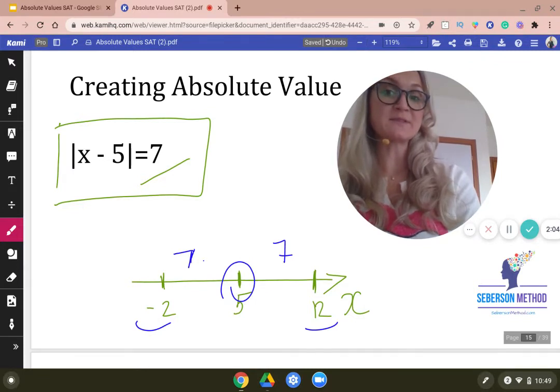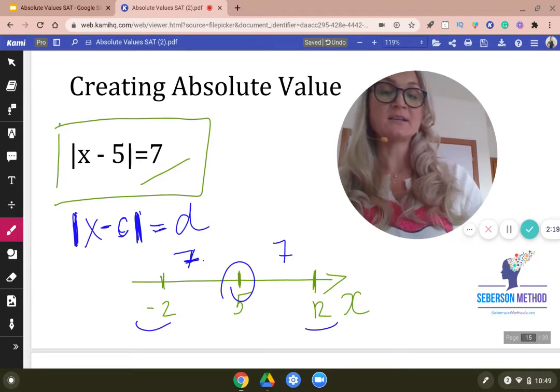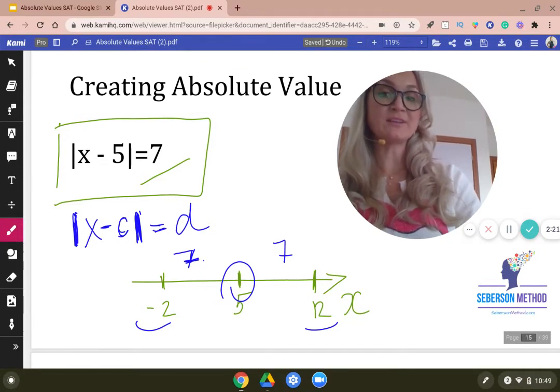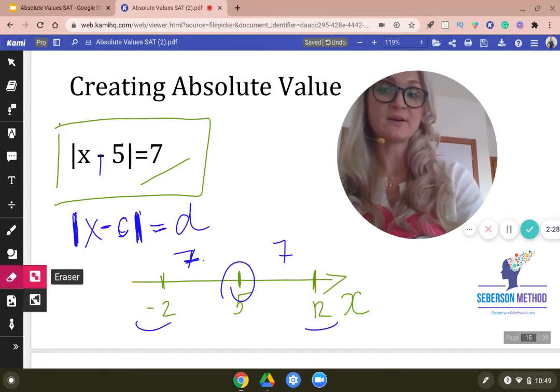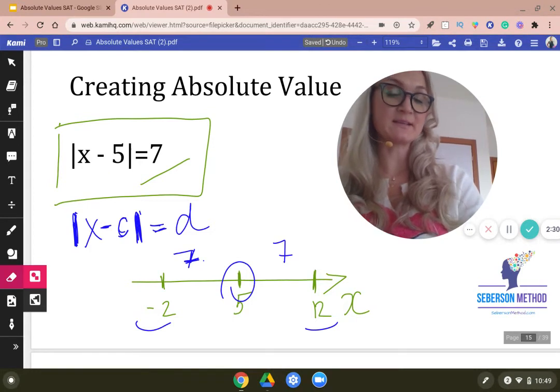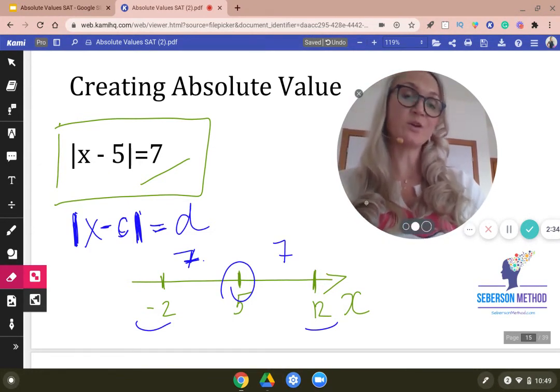So when you're creating an absolute value, keep in mind that inside of the parent, inside of the walls, I call them the walls, there's an x minus the coordinate equals the distance. So if within the absolute value you end up seeing plus 5, just know that the coordinate used to be negative 5. So if it's negative, then it's a positive coordinate, and if it's a positive sign inside of the absolute value, the coordinate was negative.